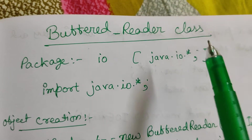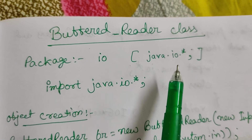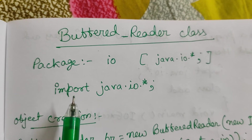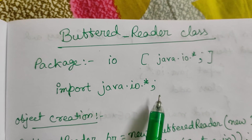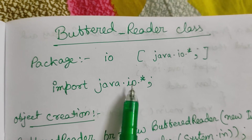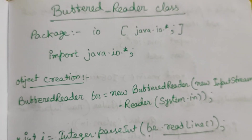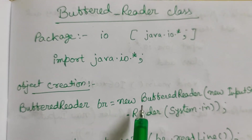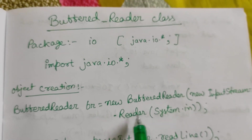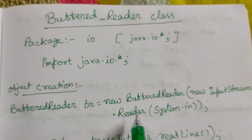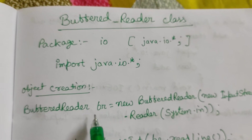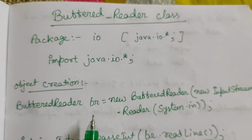Our topic is the BufferedReader class, which is present under the java.io package. To import it, we write: import java.io.*; — instead of util, we write io here, because we are using BufferedReader. Now, to create an object: BufferedReader br = new BufferedReader(new InputStreamReader(System.in)). It takes input as a stream using InputStreamReader, then we wrap it with BufferedReader. br is our object.